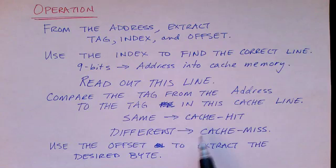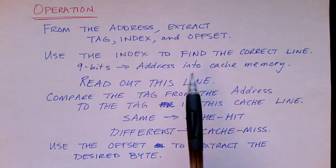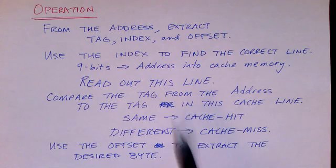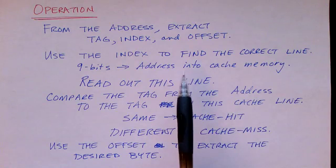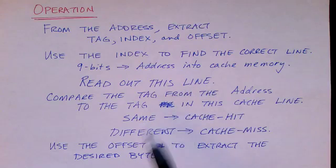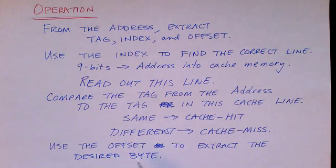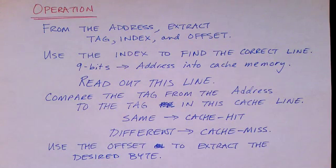And finally, if it's a cache hit, then in the final step, the individual byte or bytes from the block are extracted. So the cache uses the offset, the remaining 6 bits of the address, to determine which byte is wanted. And then it extracts that byte and returns that byte to the CPU.